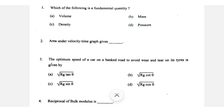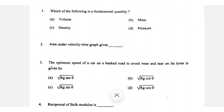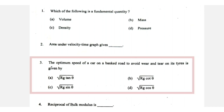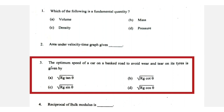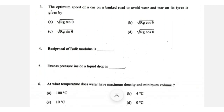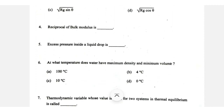The third question is about the optimal speed of a car on a banked road to avoid wear and tear. The answer is root Rg. Then the bulk modulus — its reciprocal is compressibility. The excess pressure inside a liquid drop: the derivation gives 2s divided by R.